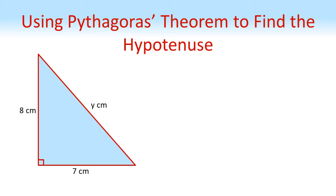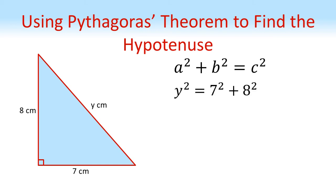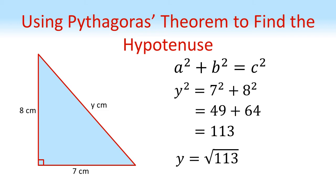Let's try this for another example. Here's another right-angled triangle. The shorter sides are 7 centimetres and 8 centimetres, and we want to find the hypotenuse Y. Here's our formula. So Y squared equals 7 squared plus 8 squared, which equals 49 plus 64, which equals 113. So Y is going to equal the positive square root of this, so 10.6 centimetres to one decimal place. And again, just checking, this is longer than 7 and 8 — it looks like a good answer.